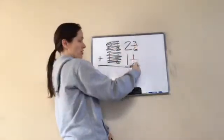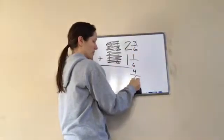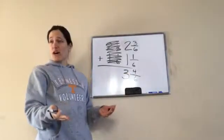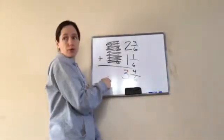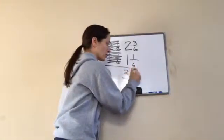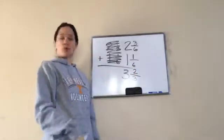So let's add our fraction part up first. Three plus one is four sixths, two plus one is three. I can say that's the final answer, but what do we always have to remember to do? Reduce. Two will go into four two times. Two will go into six three times. Final answer, three and two thirds.